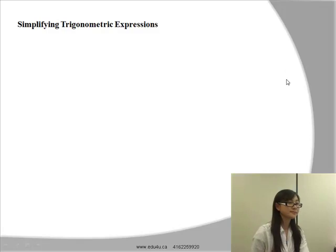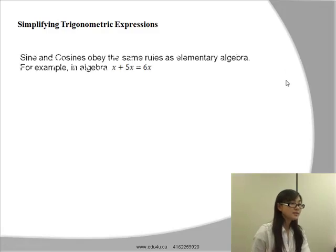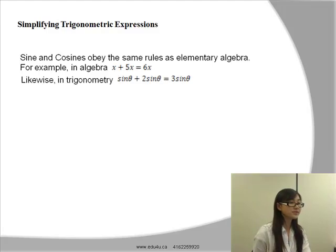Now let's take a look at simplifying trigonometric expressions. Sine and cosine obey the same rules as elementary algebra. For example, in algebra we have x plus 5x equals 6x. Likewise, in trigonometry we have sine θ plus 2 sine θ equals 3 sine θ.